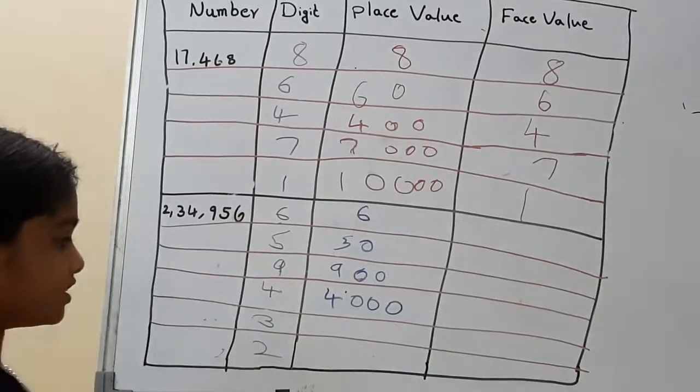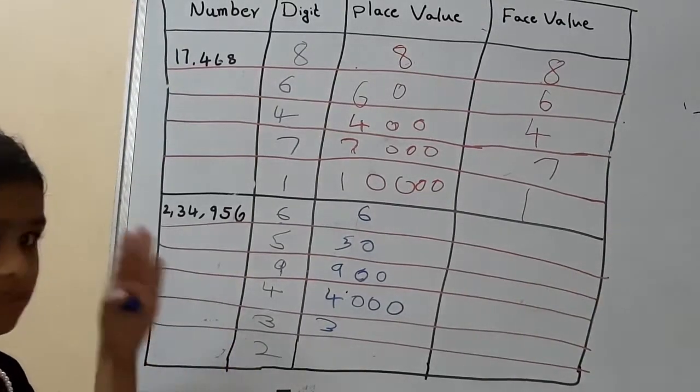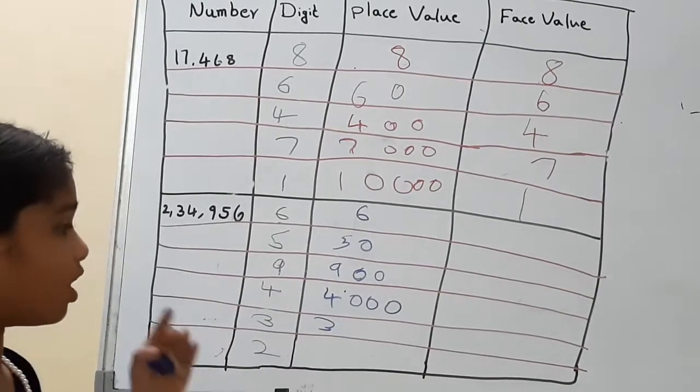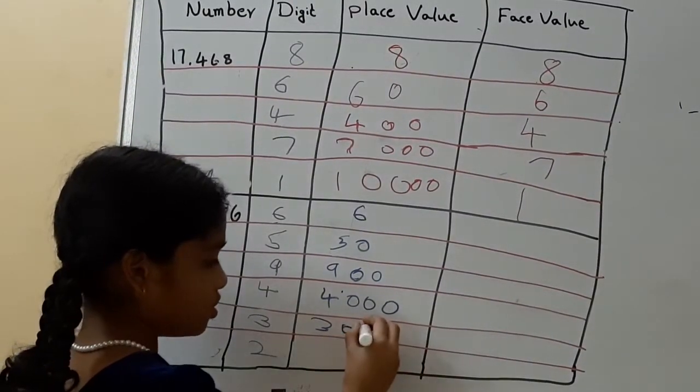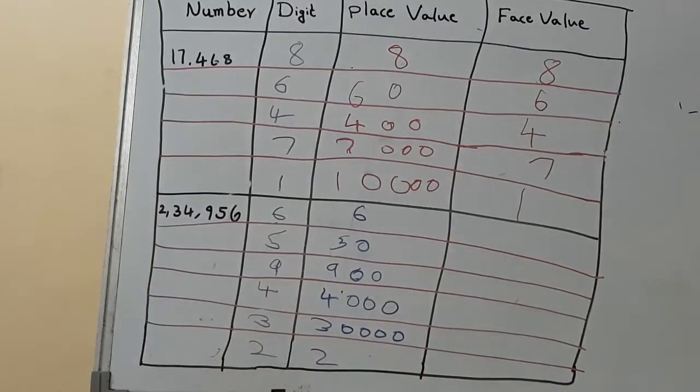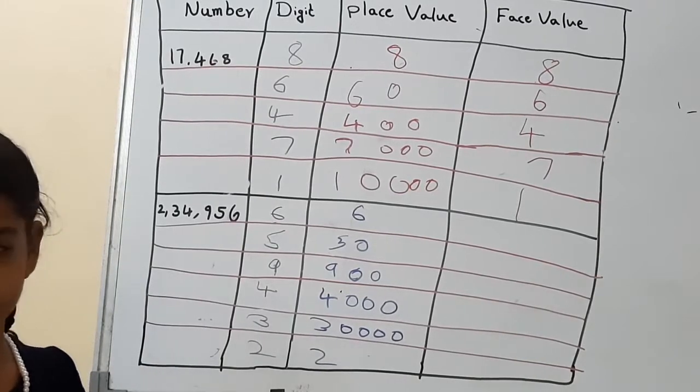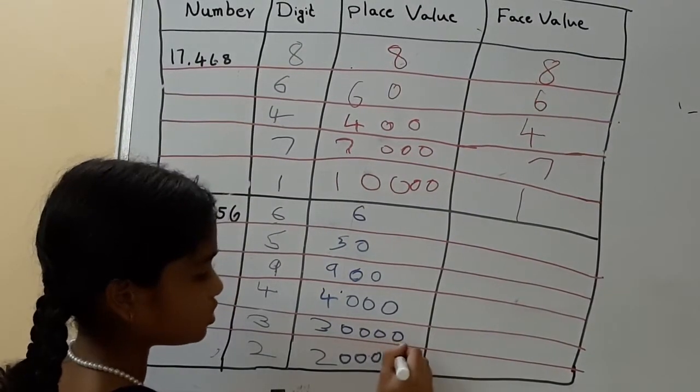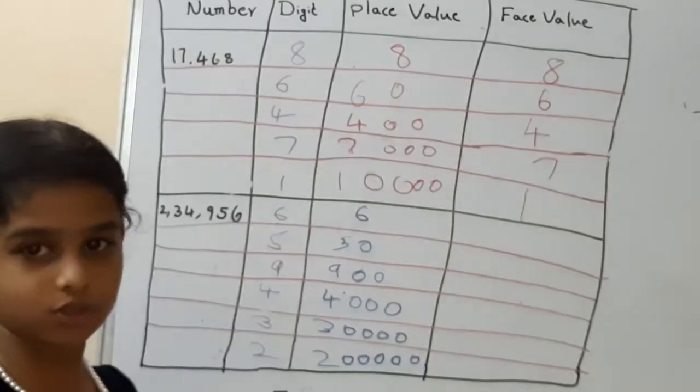And in 3. What is the 3? This one. 3 place value is 10,000. And how many zeros are there in 10,000? Four. So then keep four zeros. And 2. 2 place value is lakh. So how many are there? Five. So keep five zeros.